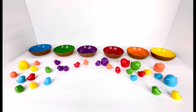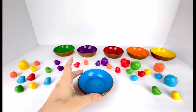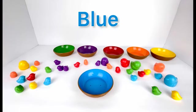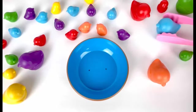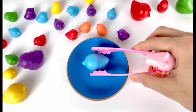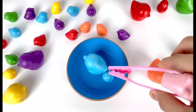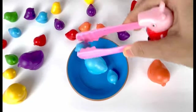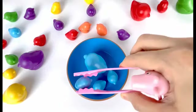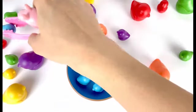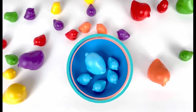All right, let's start with the blue nest. Blue! Now we need to collect the blue birds and put them into the blue nest. One, two, three, four, five. Five blue birds in a blue nest.